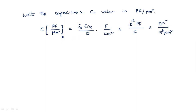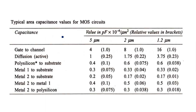Typical area capacitance values for MOS circuits are given in tabular form — these are standard values particularly for each capacitance. We have different capacitances: gate-to-channel capacitance, diffusion capacitance, polysilicon-to-substrate, metal 1 to metal 2, metal 1 to substrate, metal 2 to substrate, metal 2 to polysilicon. These capacitors exist virtually without intervention because when two conducting layers are separated by a dielectric material, capacitance action exists.